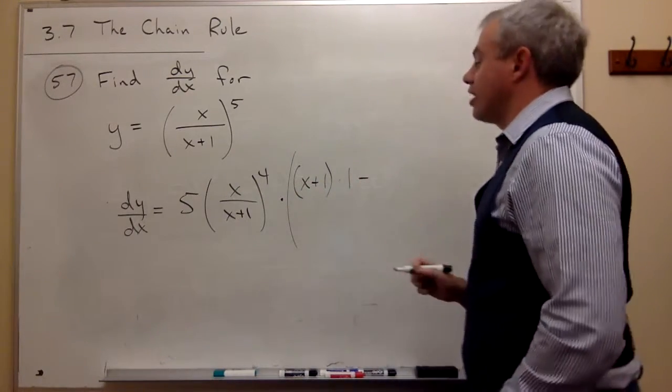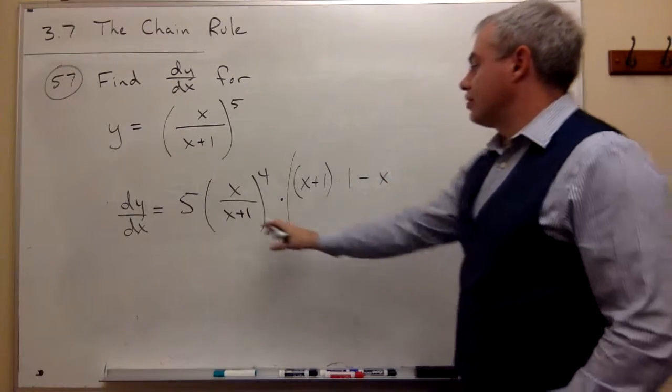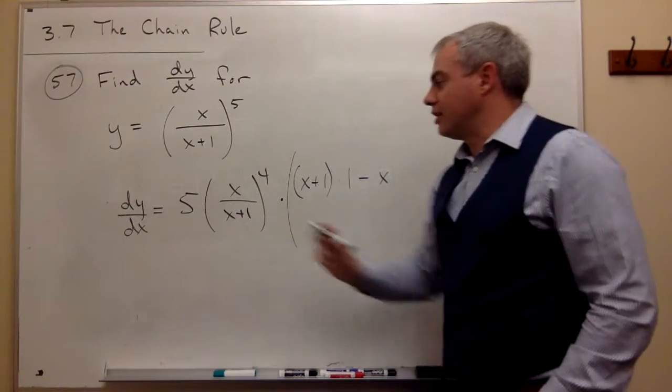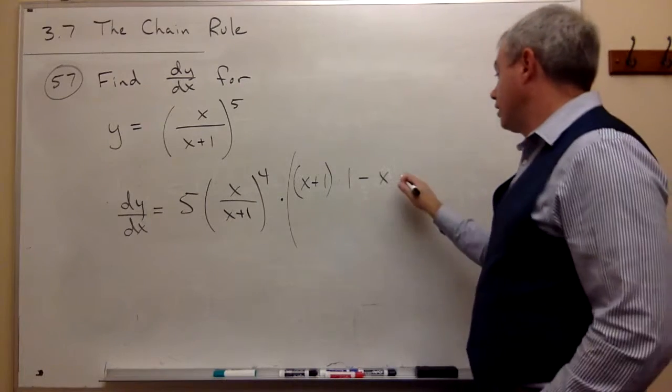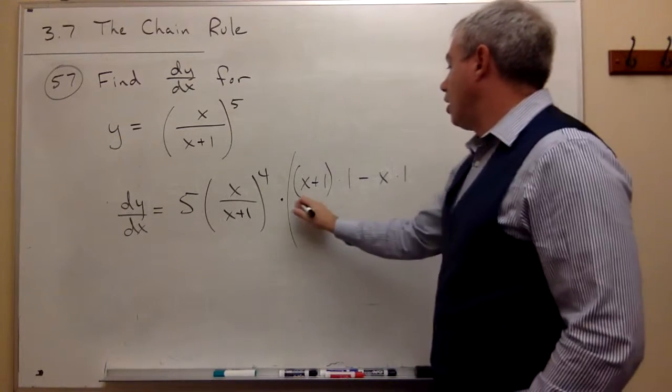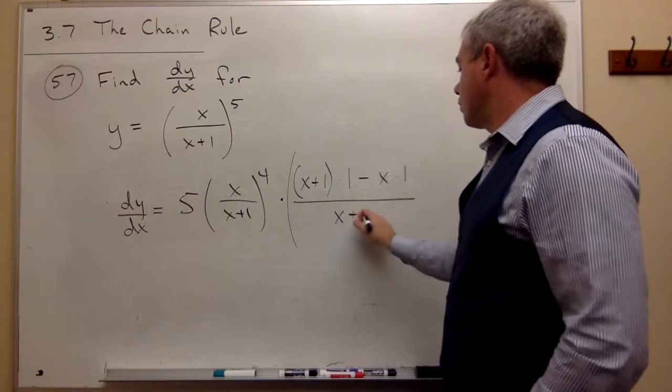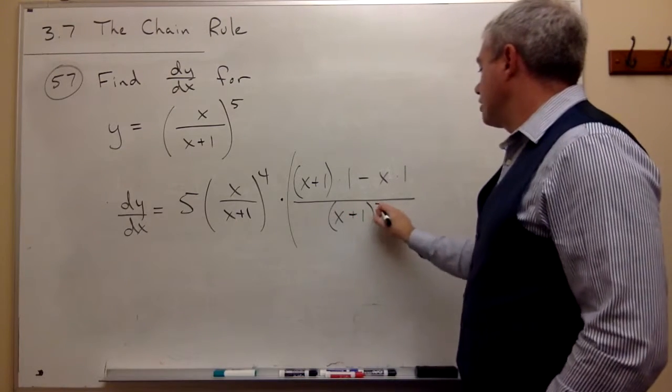Minus the top, which is x, times the derivative of the bottom. But the derivative of x plus 1 is 1, times 1, all over the bottom, x plus 1, quantity squared.